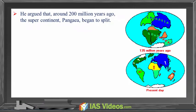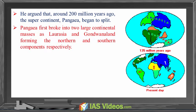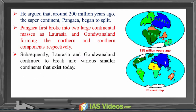He argued that around 200 million years ago, the super-continent Pangaea began to split. Pangaea first broke into two large continental masses — Laurasia and Gondwana Land — forming the northern and southern components respectively. Subsequently, Laurasia and Gondwana Land continued to break into various smaller continents that exist today.